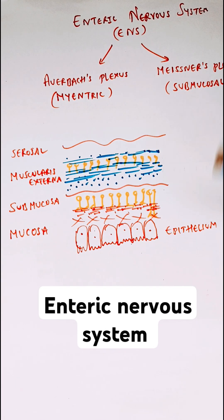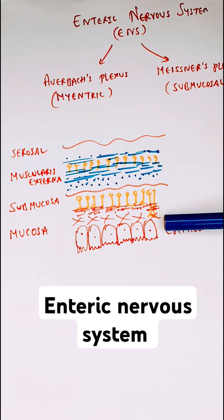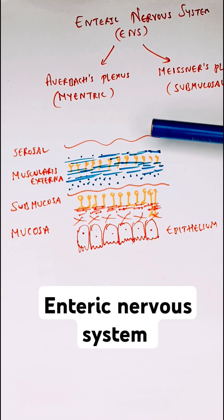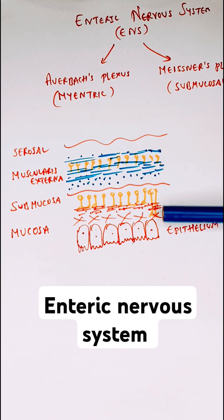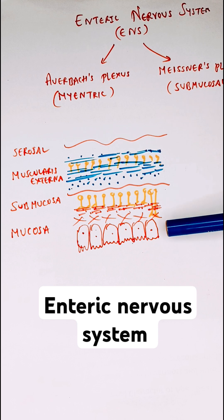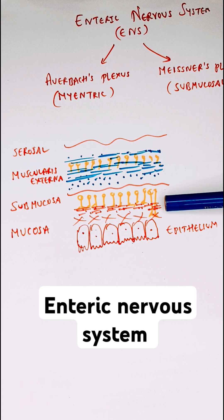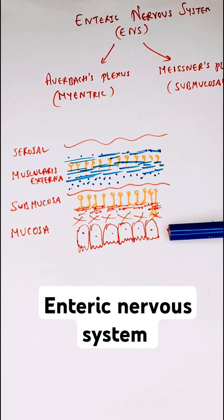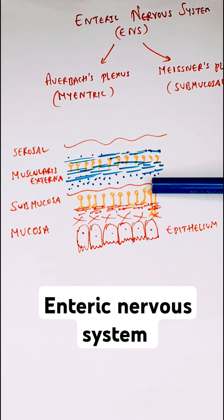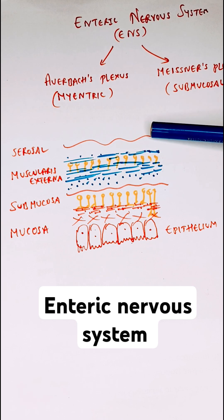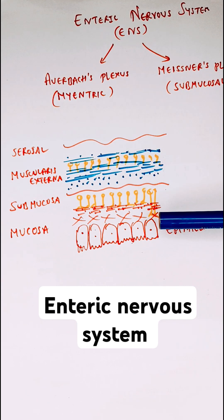Now in the diagram you can see the four layers of the gut wall. We have mucosa followed by submucosa, muscularis externa, and serosal layer. The mucosa can be divided further into the epithelial lining cells, your enterocytes, then the lamina propria, and also some muscles in the mucosa which we call muscularis interna. These are the four layers of the GIT.